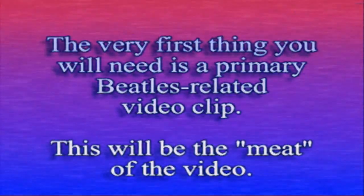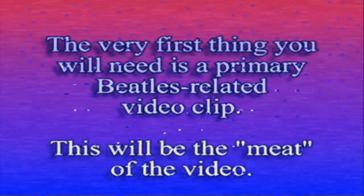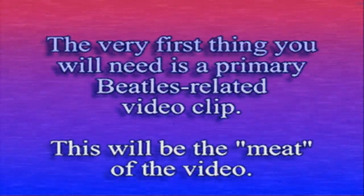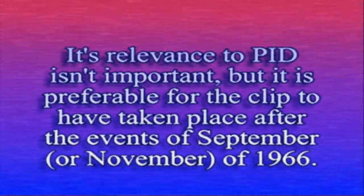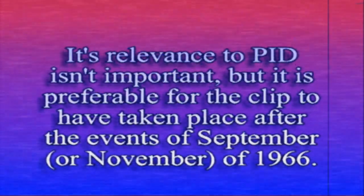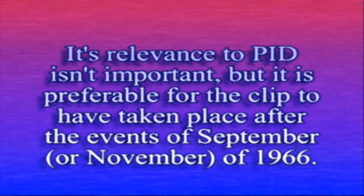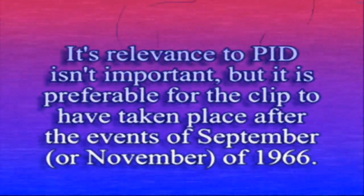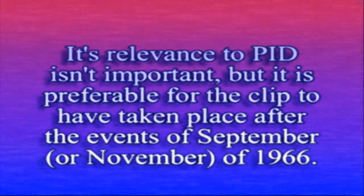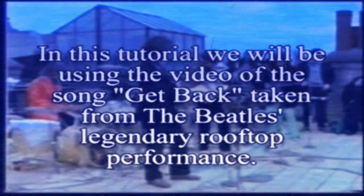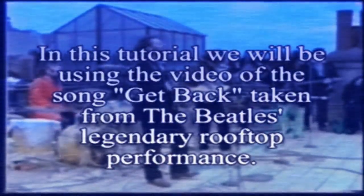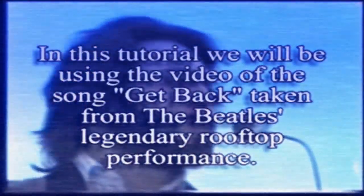The very first thing that you will need is a primary Beatles-related video clip. This will be the meat of the video. Its relevance to PID isn't important, but it is preferable for the clip to have taken place after the events of September or November of 1966. In this tutorial we will be using the video of the song Get Back, taken from the Beatles' legendary rooftop performance.